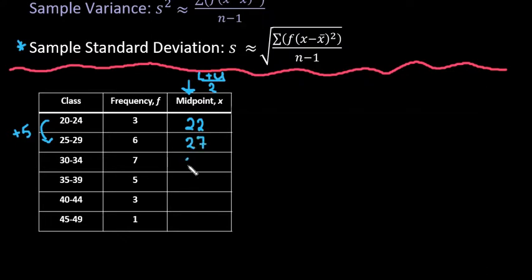So my next one would be 27, 32, 37, 42, and 47. So all I'm doing is adding 5 each time, which is the class width. Or like I said, I could individually use the formula for each one.